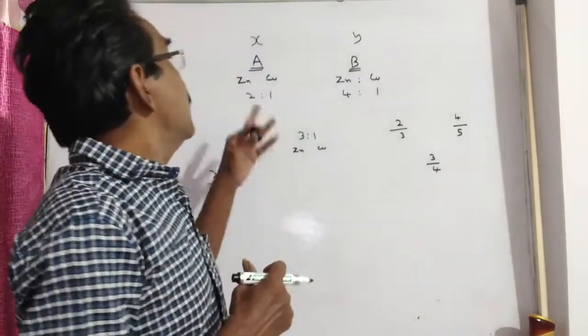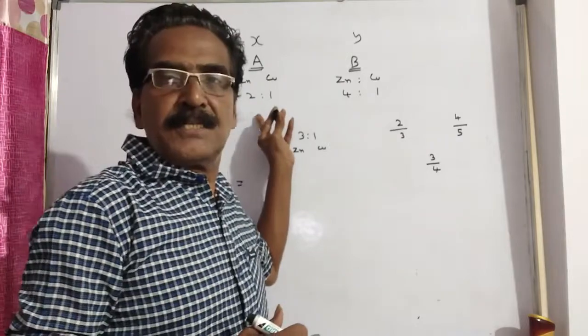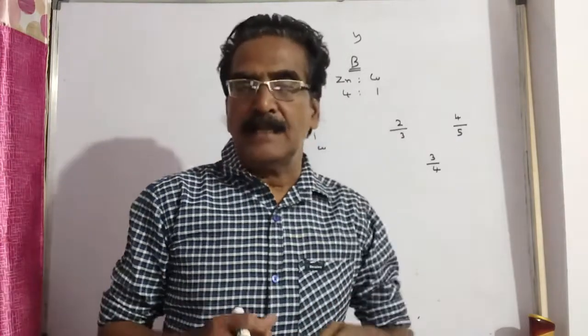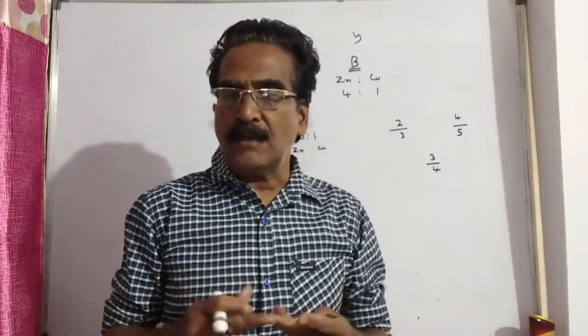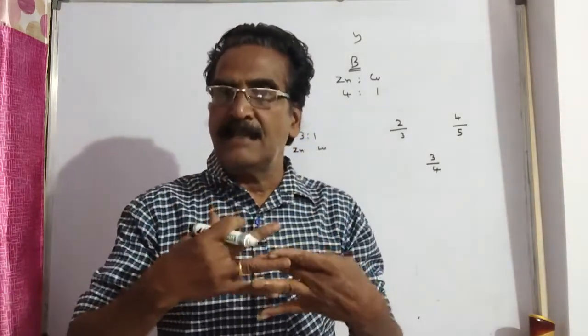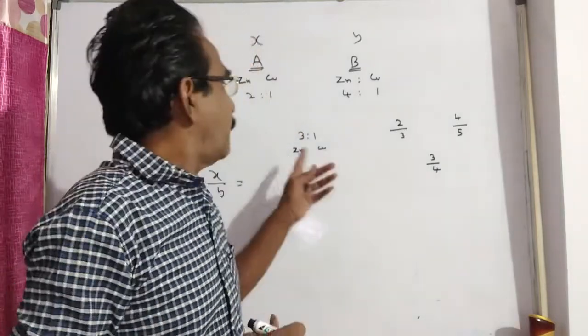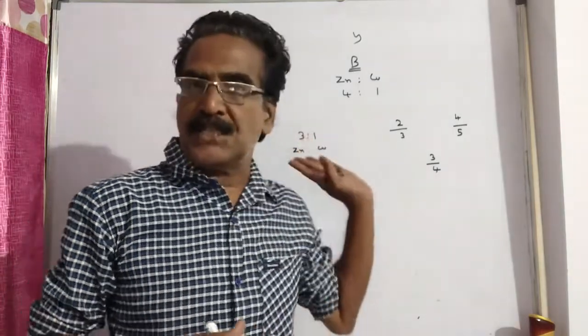See friends, two alloys contain zinc and copper in the ratio 2:1 and 4:1. Now the question is, in what ratio these two alloys should be mixed to get a new alloy in which zinc and copper are in the ratio 3:1.